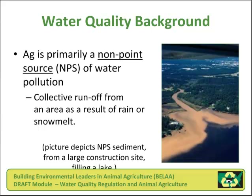Agriculture is primarily tied to non-point sources of water pollution. Non-point source pollution is the collective runoff from an area as a result of rain or snow melt. In the image to the right, we see a plume of red clay soil in a reservoir in the southeastern United States. The soil was caused by erosion at a construction site, flowed off of the land, and collected in this water body.